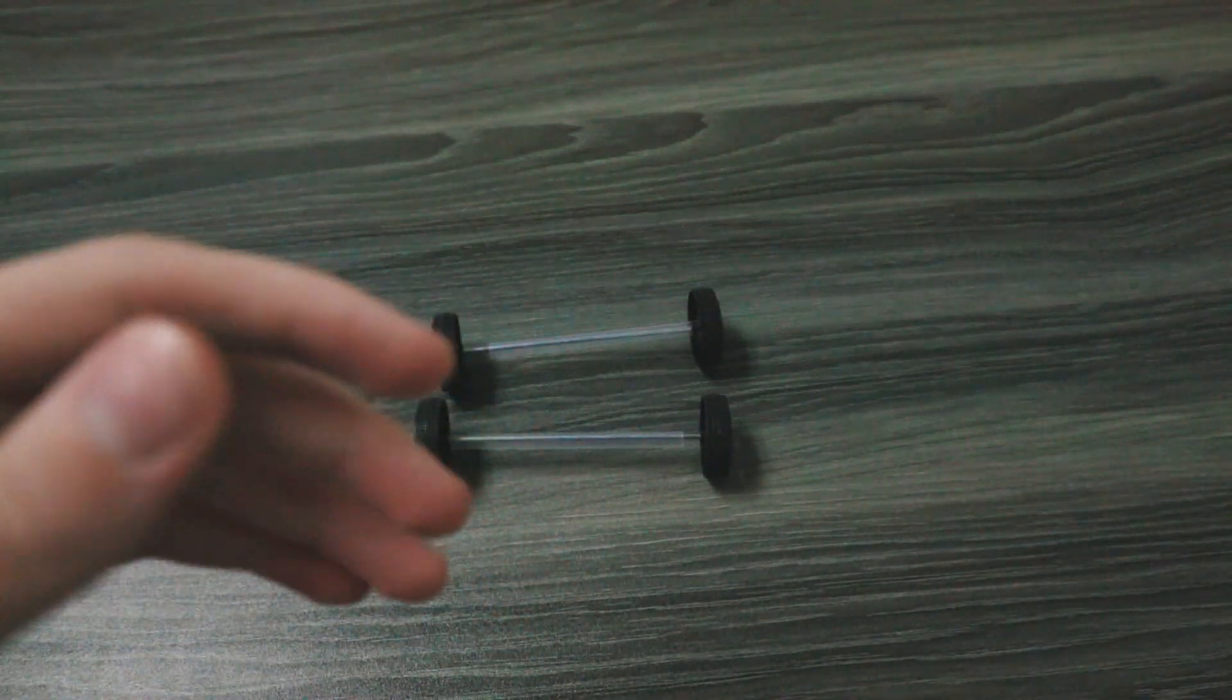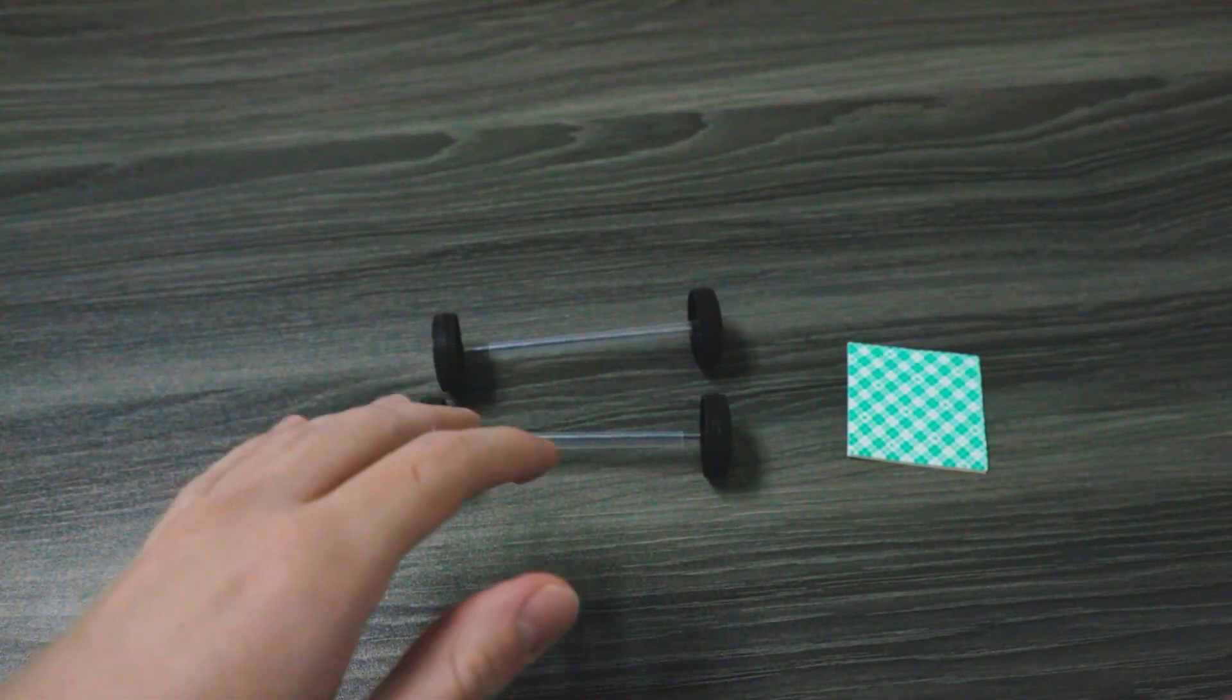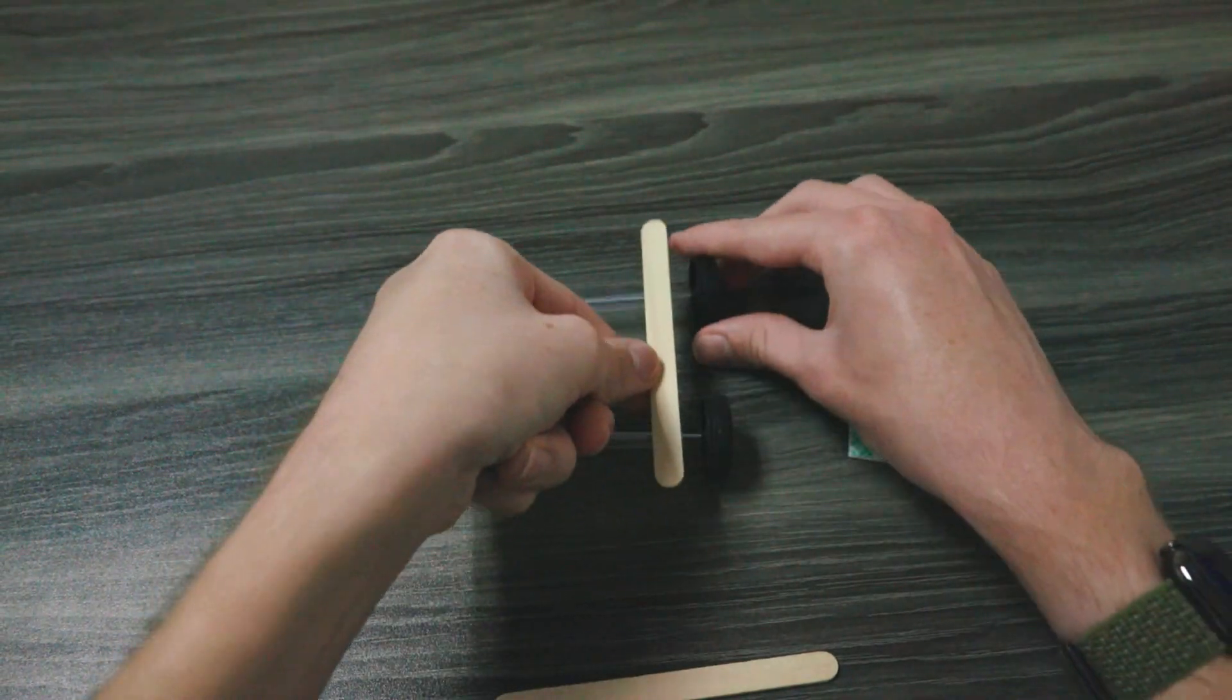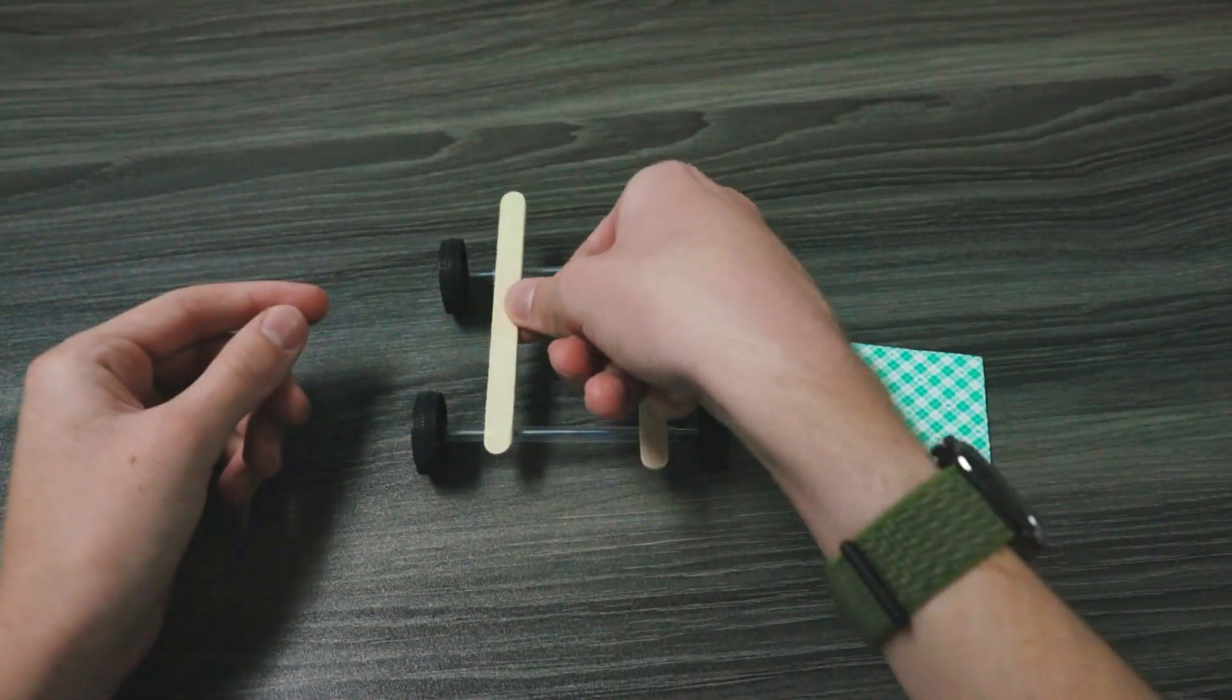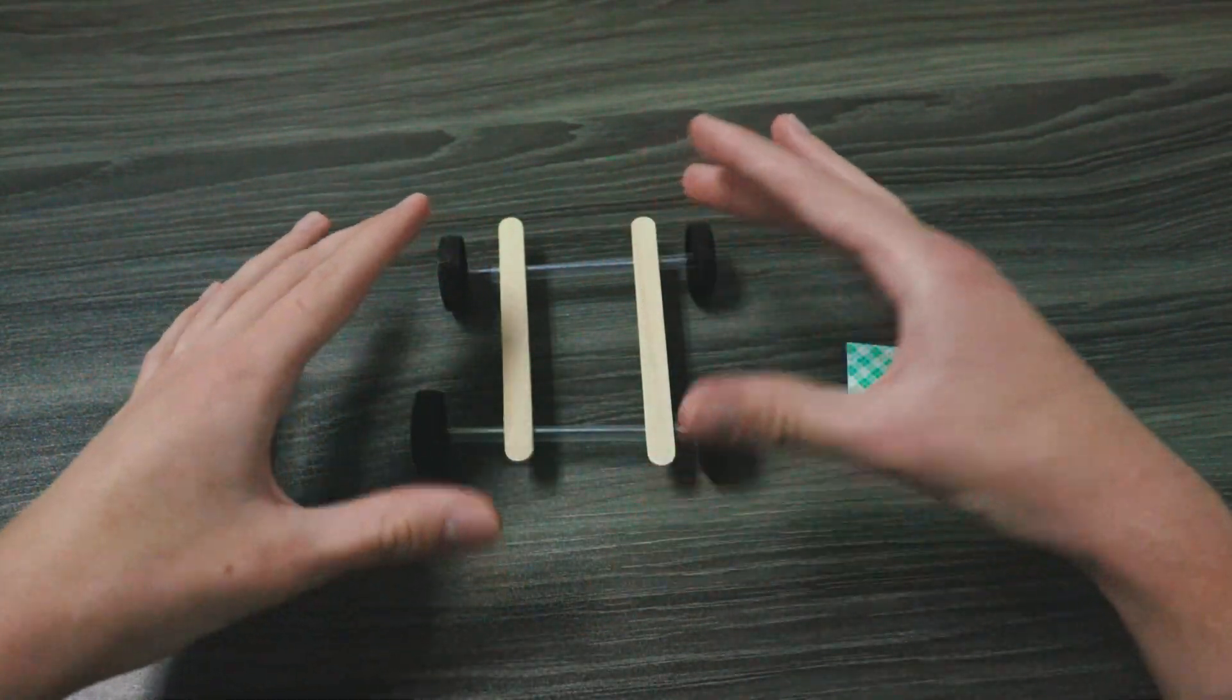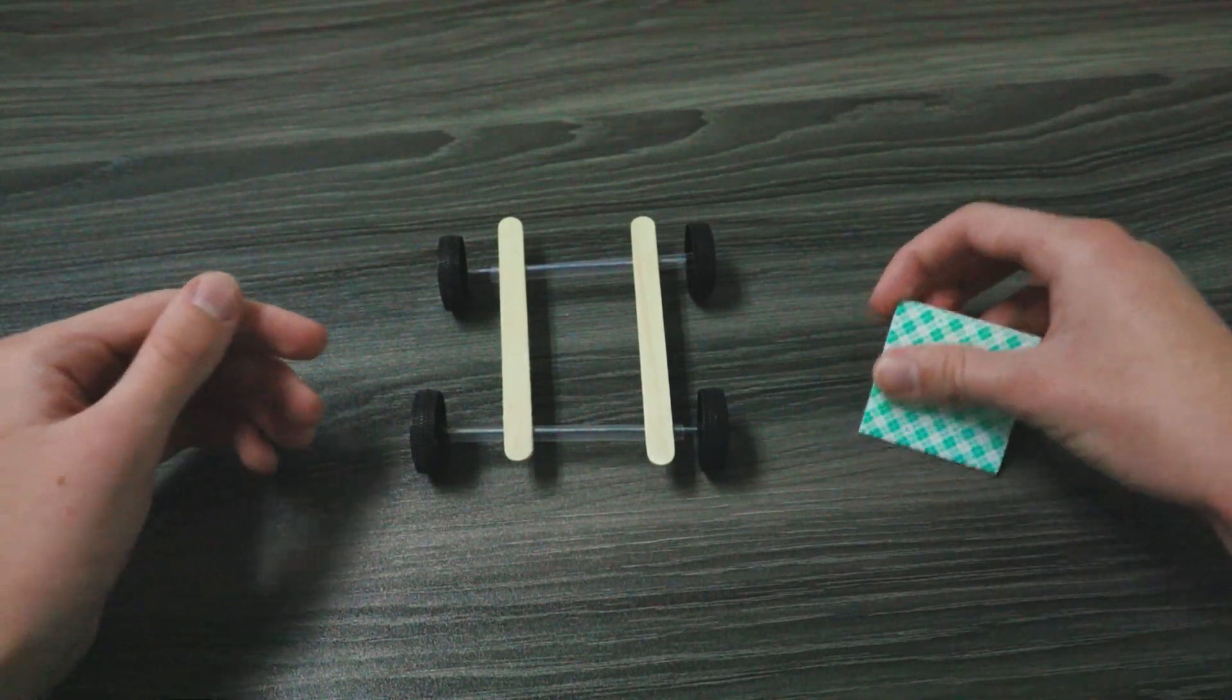Now that we have two axles for our car we are going to use double-sided squares to attach two popsicle sticks to the top of the straws. We want to sort of space them out on these axles as much as possible and do so carefully to form a kind of hashtag shape just as we drew it in our blueprint earlier.